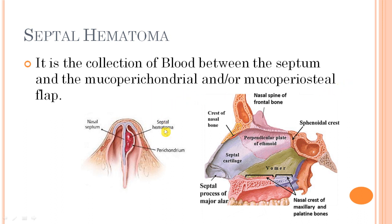As discussed in the previous video on nasal septum anatomy, the nasal septum divides the pyramid-shaped nasal cavity into left and right halves. It consists of the columnar septum, the membranous septum, and the septum proper. The septum proper is covered by the mucous membrane, whereas the columnar and membranous portions are covered by skin.